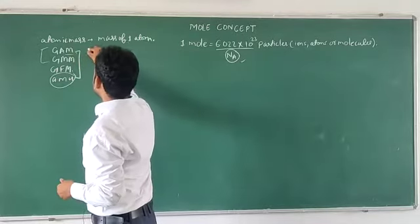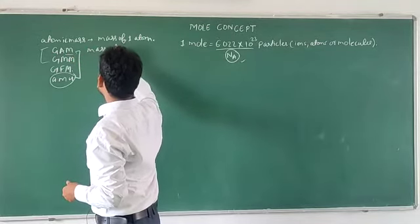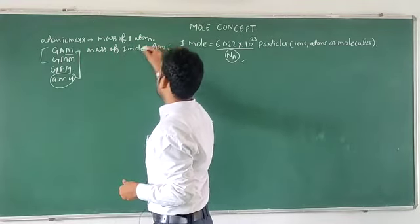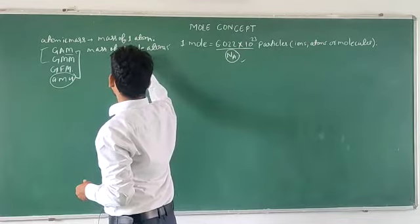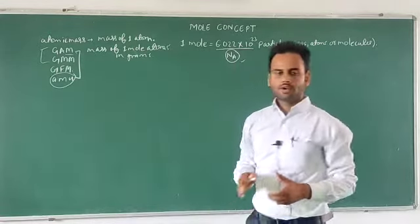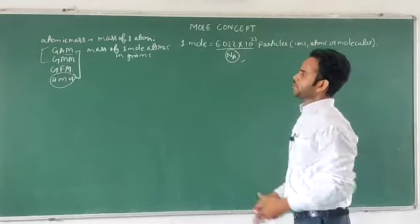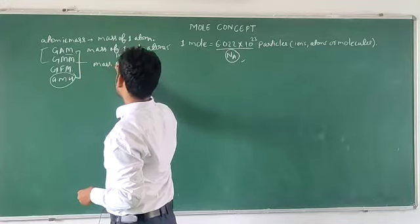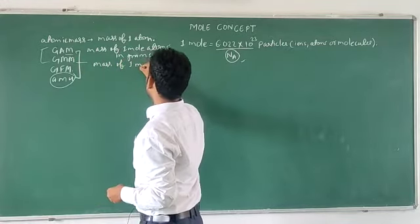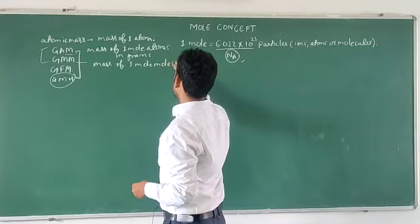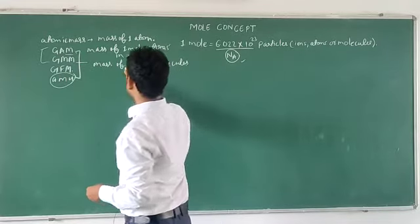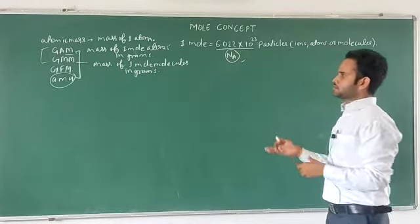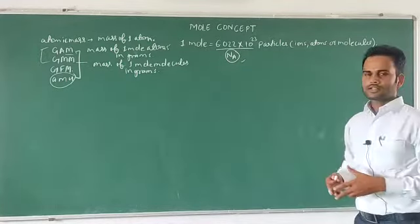Gram atomic mass means the mass of one mole atoms in grams — that would be gram atomic mass. And in the case of GMM, it is gram molecular mass — it would be the mass of one mole molecules in grams.